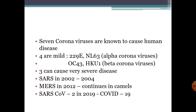There are seven coronaviruses known to cause human disease. Four of these produce mild symptoms. They are 229E and NL-63, both alpha-coronaviruses, and OC-43 and HKU-1, both beta-coronaviruses. These can cause very mild disease.